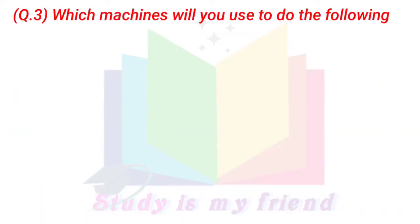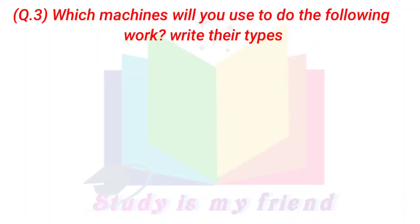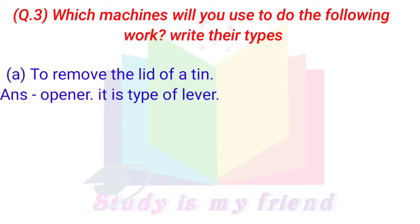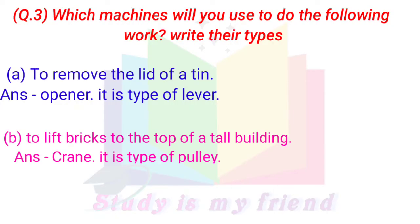Question 3. Which machines will you use to do the following work? Write their types. A. To remove the lid of a tin. Answer: Opener. It is a type of lever.